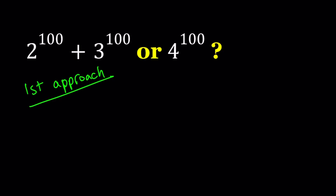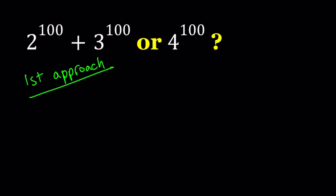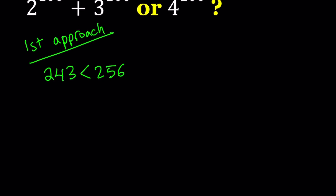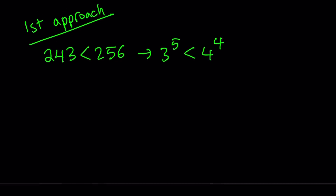First of all, I'm going to compare two numbers that are powers of 3 and powers of 4. So we'll start with 243 and 256. Obviously, 243 is less than 256. This can also be written as 3 to the 5th power is less than 4 to the 4th power, which is the same as 2 to the 8th power.